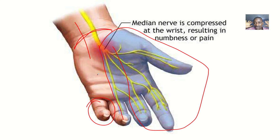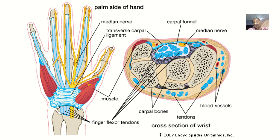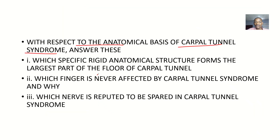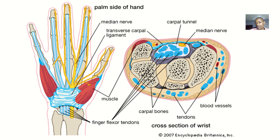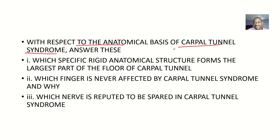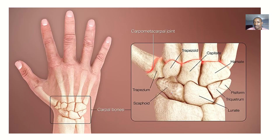For the first question — which rigid structure forms the largest part of the floor of the carpal tunnel — they are not asking for a muscle, they are saying rigid, meaning a bony structure. Looking at this tunnel here, the answer is the capitate bone. Looking at the floor of this tunnel, which structure forms the largest part?